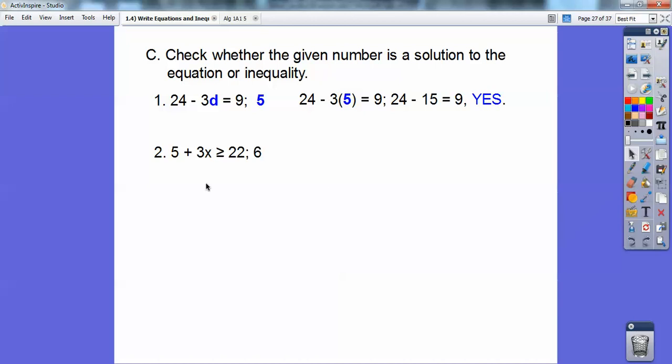How about this one? 5 plus 3X, greater than or equal to 22, and they want you to plug in 6 for X right there. So it's going to be 5 plus 3 times 6, and 3 times 6 is 18, and then 5 plus 18 is 23, and since 23 is greater than or equal to 22, this would be yes. So, you'd be showing this if you were in my class. I'd want to see this work, you guys. I don't want you to just write yes or no. To me, that's just taking the easy way out, and you're not doing your work. That would be no work, no credit.